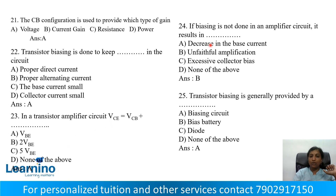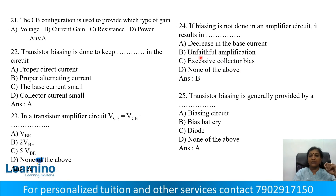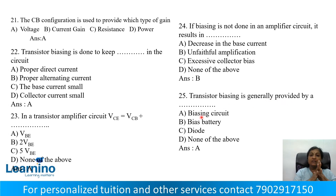Question number 24: If biasing is not done in an amplifier circuit, it results in — Option A: Decrease in base current, Option B: Unfaithful amplification, Option C: Excessive collector bias, Option D: None. Biasing is important — without it we get unfaithful amplification. Correct answer is Option B. Question number 25: Transistor biasing is generally provided by biasing circuits.